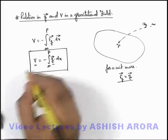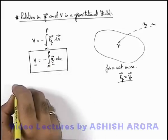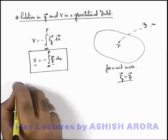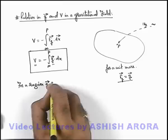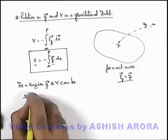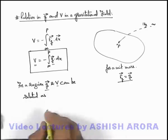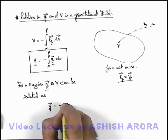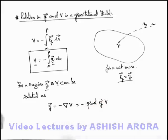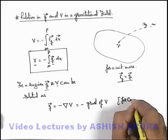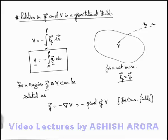Since g is the force on a unit mass and V is the potential energy of unit mass in a region, we can also define or relate g and V using the term of gradient. We can write that g vector and V are related as g vector equals negative of del V, or the negative of the gradient of potential. As g is a conservative field, for conservative fields we can relate the force and energy relationship, which we already studied in the section of dynamics.